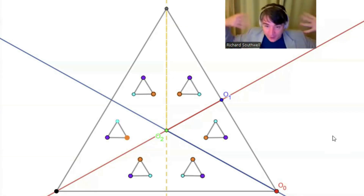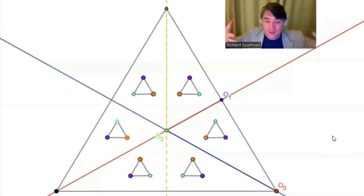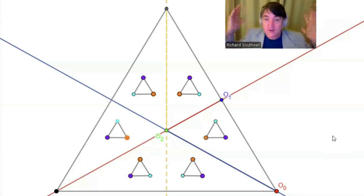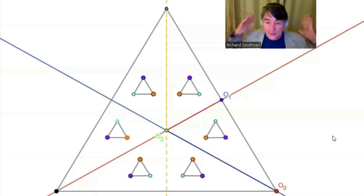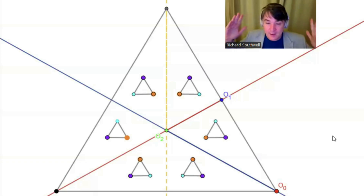How many symmetries does our triangle have? Six. How many chambers does this kaleidoscope have? Six. You could understand the symmetries of any regular polytope like this, in any dimension.